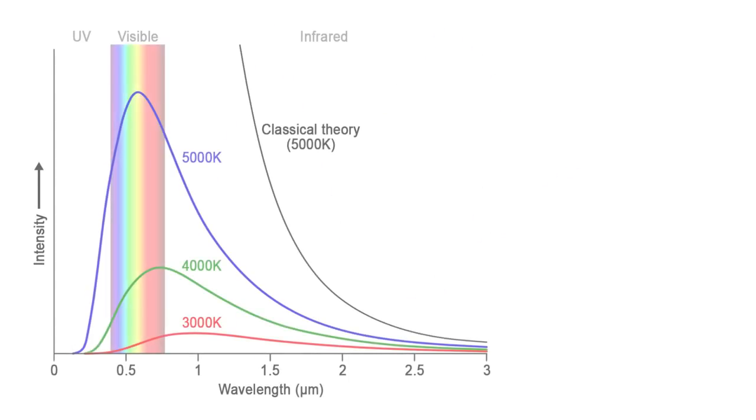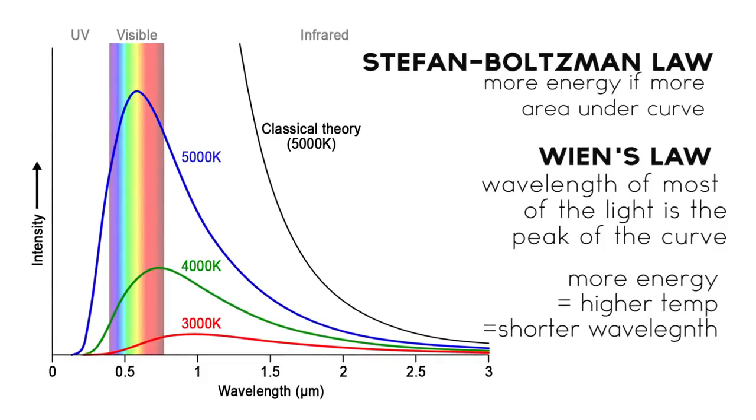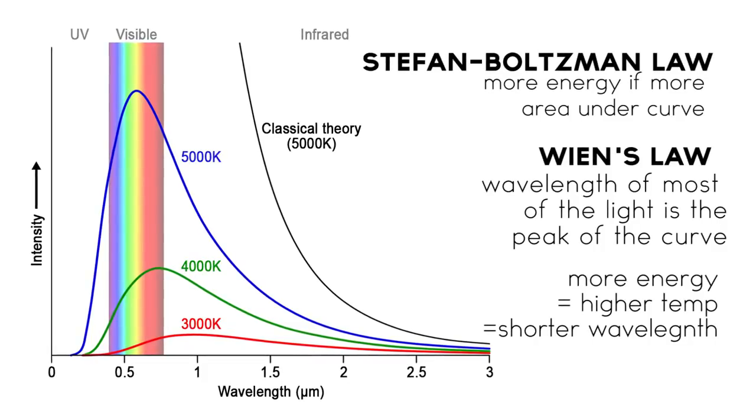We normally describe a black body spectrum with the Stefan-Boltzmann law and Wien's law. The Stefan-Boltzmann law describes the total amount of energy produced in the form of light, seen here as the area under the curve.